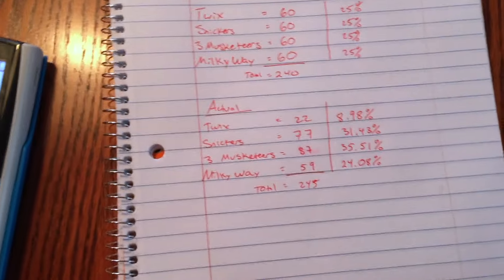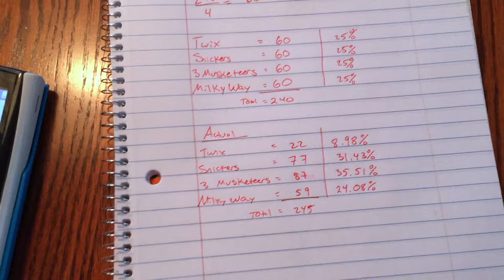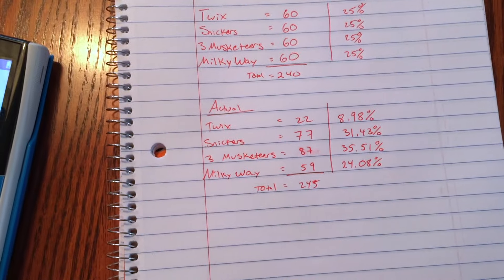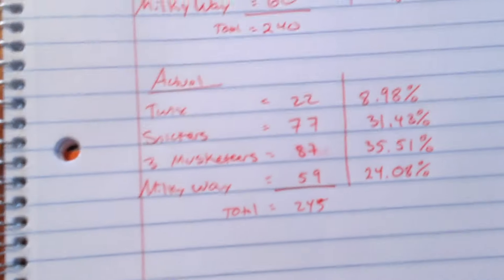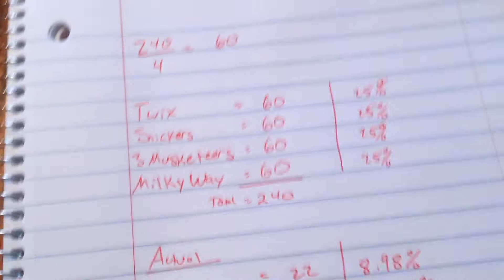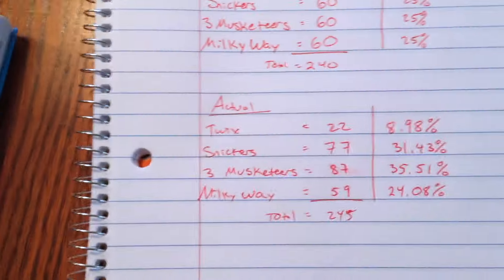Now, this comes out to be a total of 245 pieces of candy, so you get five more extra pieces of candy in this bag. That was good. But 8.98% were Twix. Look at that. 8.98% of Twix, when the advertisement would suggest 25%. Not an even spread here.